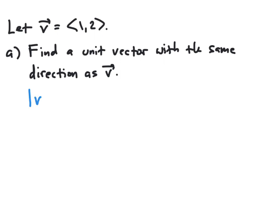In this case, we need to find the magnitude of vector v. Since we have v given in component form, this will be the square root of 1 squared plus 2 squared, which is the square root of 5. And so our magnitude of vector v is square root of 5.